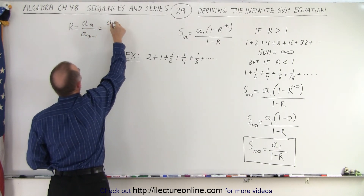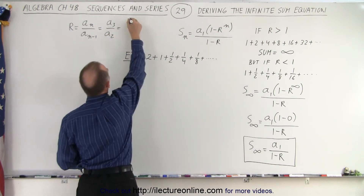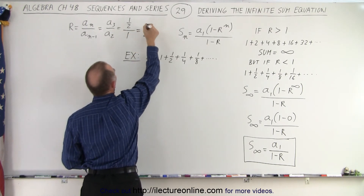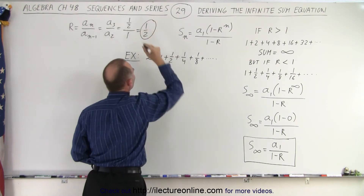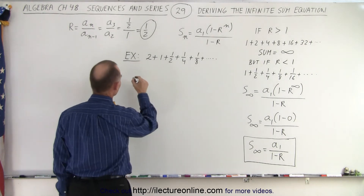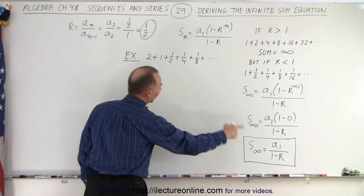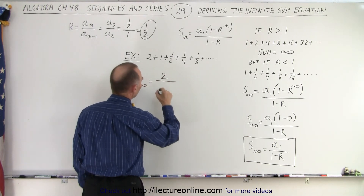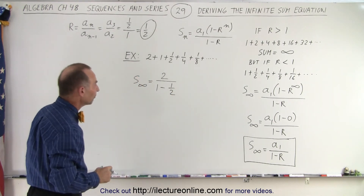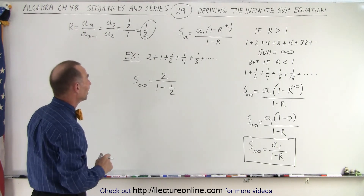For example, a-sub-3 divided by a-sub-2: the third term is one-half and the second term is 1, so that's equal to one-half. The common ratio is equal to one-half. So the infinite sum of this particular series equals a-sub-1, the first number, which is 2, divided by (1 minus the common ratio of one-half).